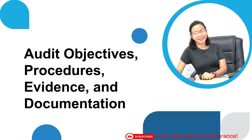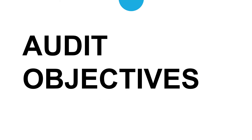We will start by unpacking audit objectives, discussing the goals auditors aim to achieve in the conduct of an FS audit. Next, we'll dive into audit procedures, which involve the methods and techniques that auditors use to gather the necessary evidence. We will also cover the different types of audit evidence and wrap it up with a discussion on documentation.